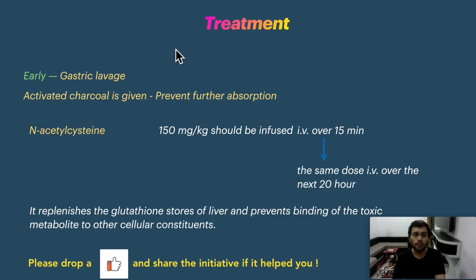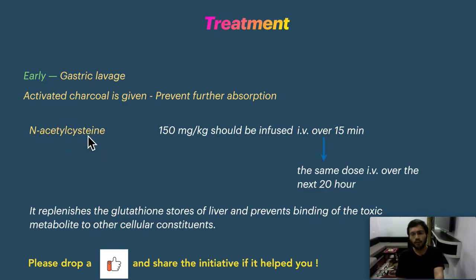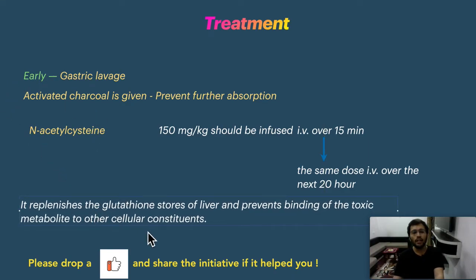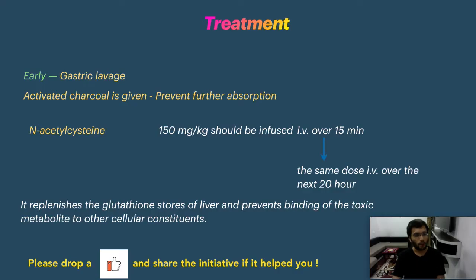Treatment: if the patient presents early with nausea, vomiting, and abdominal pain, gastric lavage can be performed and activated charcoal given to prevent further absorption. If presentation is late and the drug has already been absorbed, charcoal is not useful. In that case, the specific antidote is N-acetylcysteine (NAC), which replenishes glutathione stores. This allows glutathione to detoxify NAPQI, preventing it from binding to cellular proteins and saving the liver and kidney.